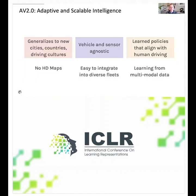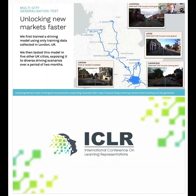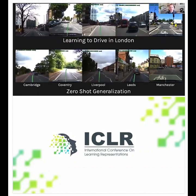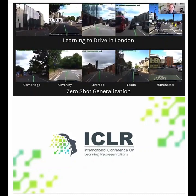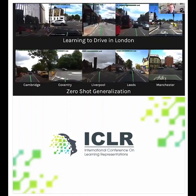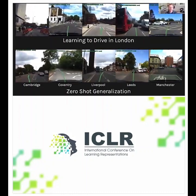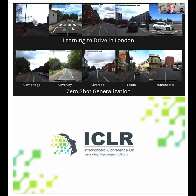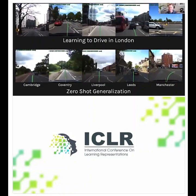In particular, we've been working on AB 2.0, an adaptive and scalable driving intelligence that generalizes to new cities, countries and driving cultures, that is vehicle and sensor agnostic, and that learns driving policies that align with human driving. Last year we took our driving models trained only in London on a road trip across the UK. It had never been trained in these cities, had no HD maps of these areas, but we applied the AB 2.0 policy in Cambridge, Coventry, Liverpool, Leeds, and Manchester.